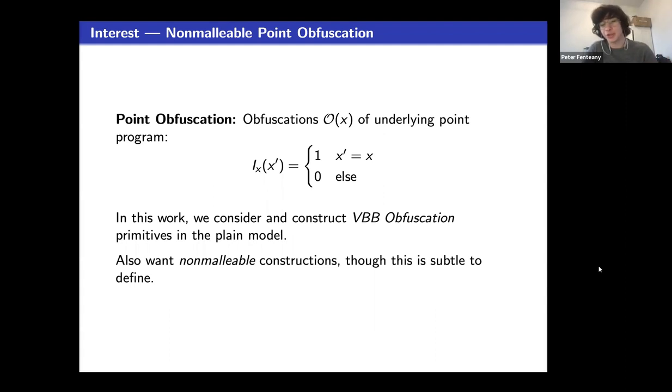Additionally, we're interested in digital lockers, also known as multibit point function obfuscations, which essentially, instead of outputting 1 or 0, output this multibit string or output perp.